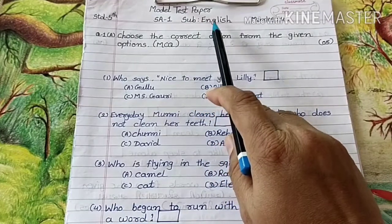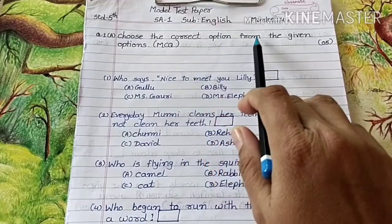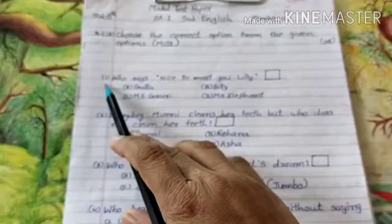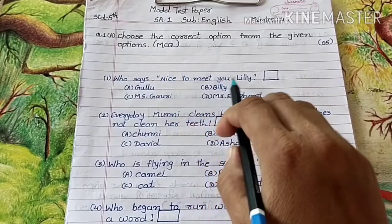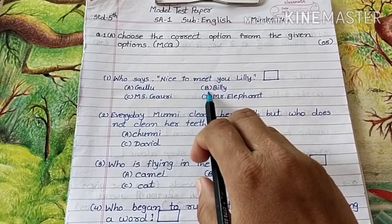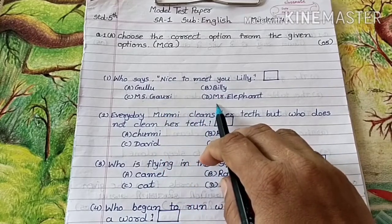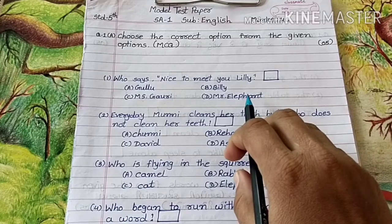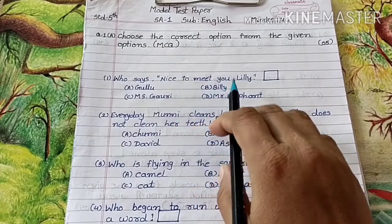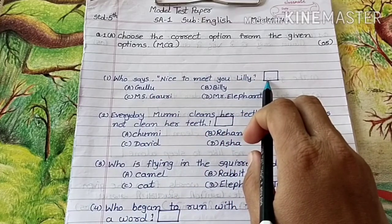Subject English, Question 1A: Choose the correct option from the given options. It's like MCQ 1. Who says 'nice to meet you Lily?' A. Gullu, B. Billy, C. Miss Gory, D. Mr. Elephant. Which answer is correct? Who says 'nice to meet you Lily'? Gullu. We will write A in the box here.